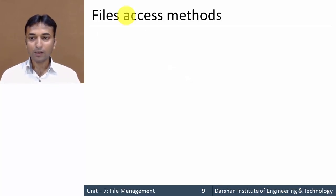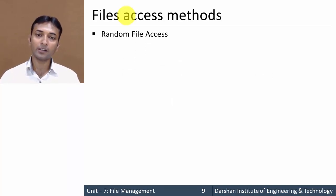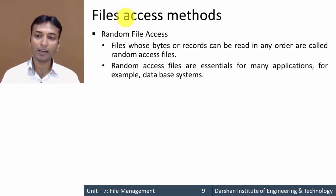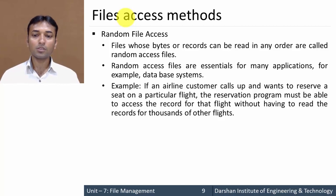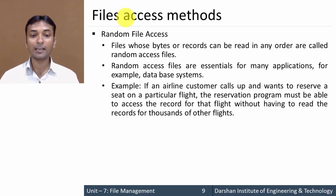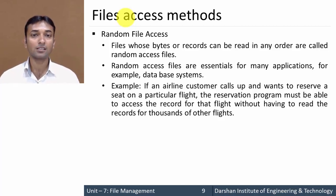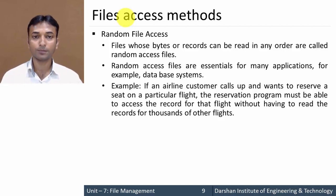The second one is random file access. The name itself indicates that you can randomly access your data from anywhere on your device. Any file whose bytes or records can be read in any order is known as a random access file. Random access files are essential for many applications, for example database systems. Suppose an airline customer calls and wants to reserve a seat on a particular flight — the reservation program must be able to access the record for that flight without reading records for thousands of other flights. For example, to access flight number 10, you can directly access that record without going from flight 1 to flight 10. That is known as random file access.